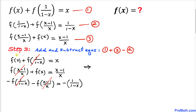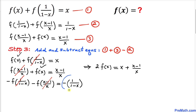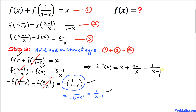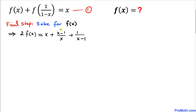After cancellations, on the left side we are left with 2·f(x). On the right hand side we have x plus (x-1)/x minus 1/(1-x). Note that 1/(1-x) can be rewritten as negative 1/(x-1), so this becomes plus 1/(x-1).